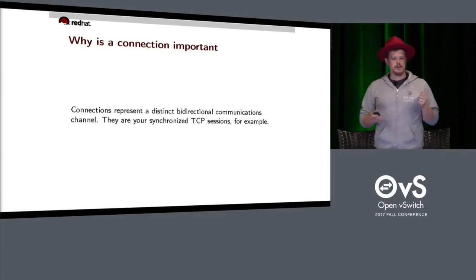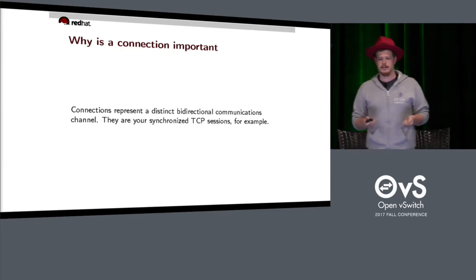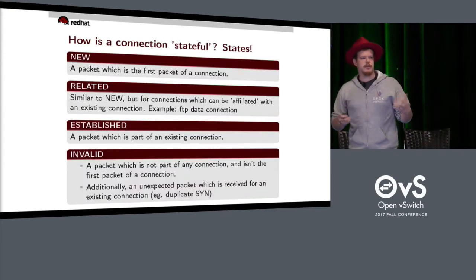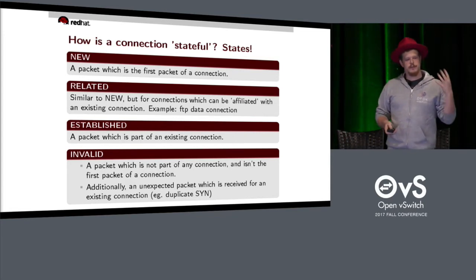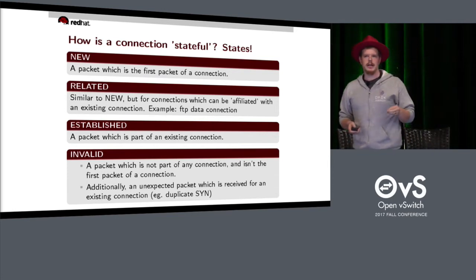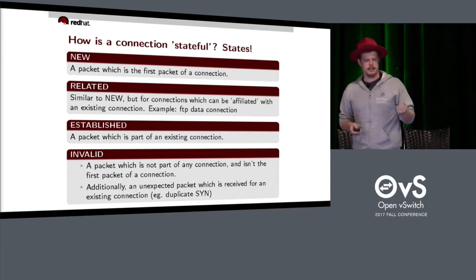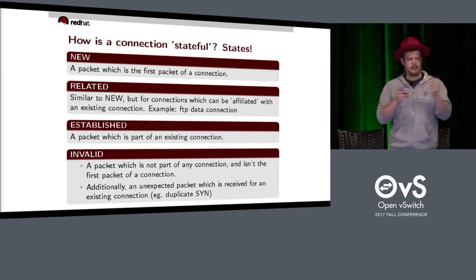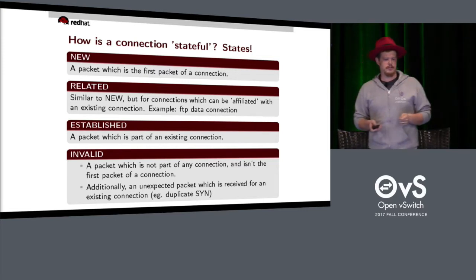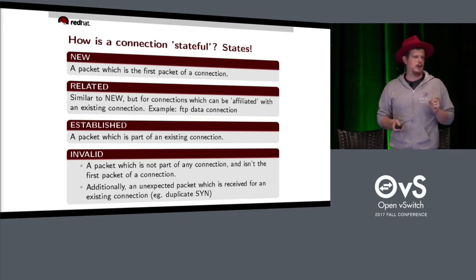Why is a connection important? It represents a distinct bidirectional communication channel — synchronized TCP sessions, UDP flows, SIP sessions. How is it stateful? It has states. The four main states are: New, which is the first packet of a connection; Related, which is like new but for a connection we expect (like when FTP port happens); Established, for packets flowing as part of an existing connection; and Invalid, a packet not part of any connection or an unexpected packet like two SYNs in a row.